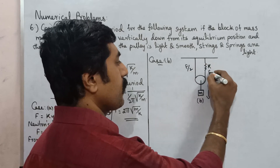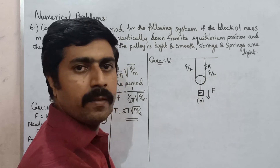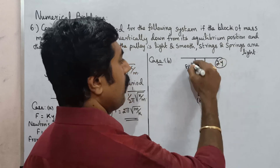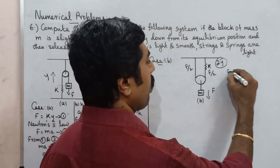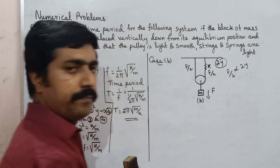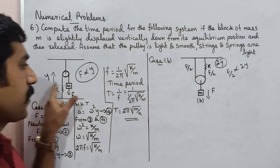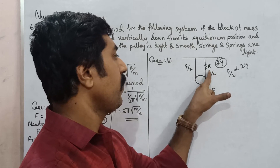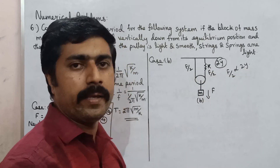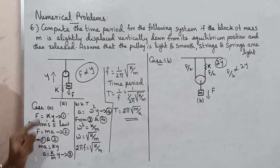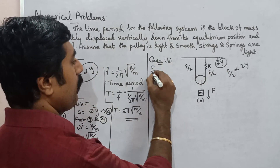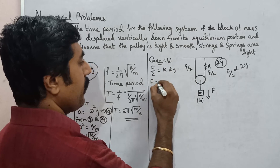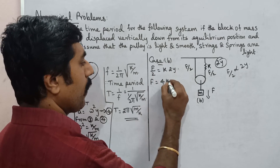For Case B, the force on each side of the pulley is F/2, so the total force is F/2. The displacement is two times y — this side is displaced and that side is displaced. So F/2 is directly proportional to 2y. This gives F/2 equals k times 2y, so F equals 4ky.